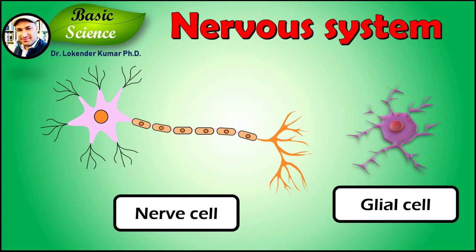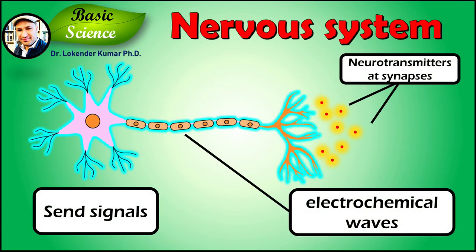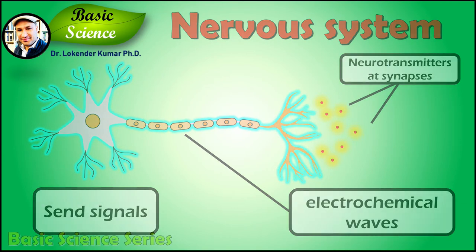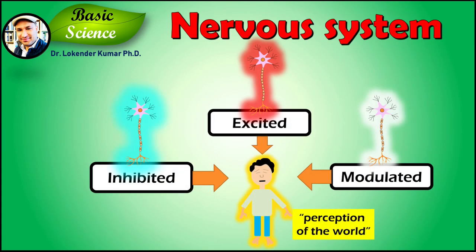At the cellular level, the nervous system is defined by the presence of a special type of cell called the neuron, also known as the nerve cell. Along with neurons, the nervous system contains other specialized cells called glial cells, or simply glia, which provide structural and metabolic support. Neurons have special structures that allow them to send signals rapidly and precisely to other cells. They send these signals in the form of electrochemical waves traveling along thin fibers called axons, which cause chemicals called neurotransmitters to be released at junctions called synapses. A cell that receives a synaptic signal from a neuron may be excited, inhibited, or otherwise modulated.